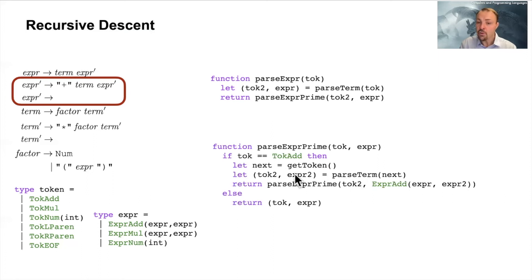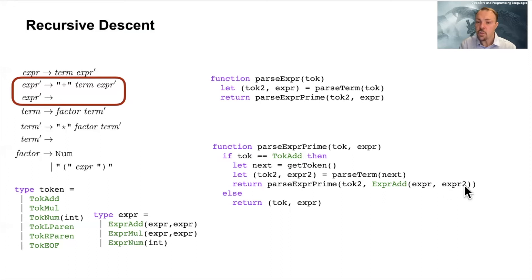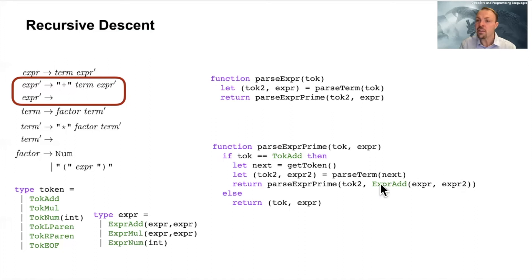We have token2 from the last token picked out, and here we construct the AST node: ExpressionAdd from the expression passed in from above and expression2 from the parseTerm call. This is why we get left associativity — the expression received from the caller becomes the left-hand side, and the result of parseExpressionPrime becomes the right-hand side. The newly constructed expression is then passed to the next recursive call of ExpressionPrime, becoming the new left-hand side, preserving the correct structure throughout.